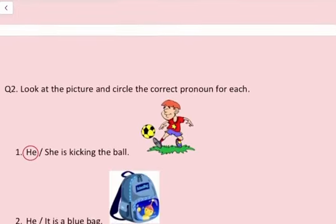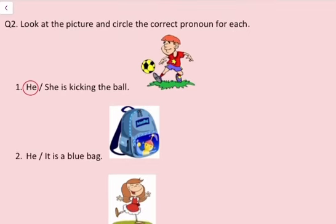Question number 2. Look at the picture and circle the correct pronoun for each. For example, he or she is kicking the ball. Jo ball ko kick kar raha hai, vah boy hai. Toh us ke liye hum ne he use kiya, or he ko circle kiya.